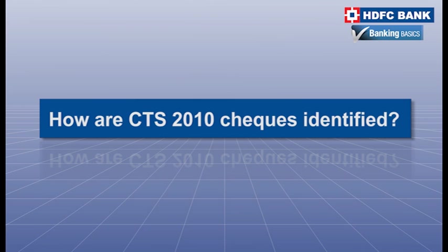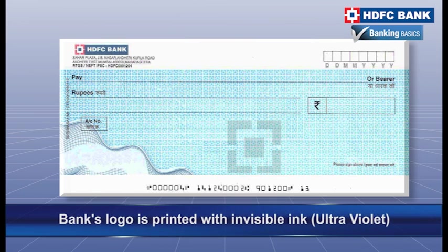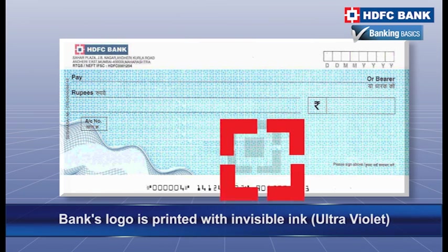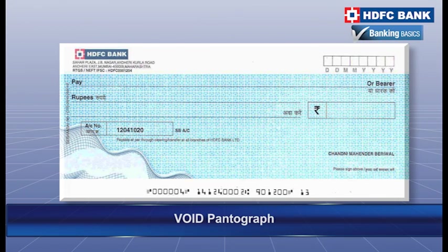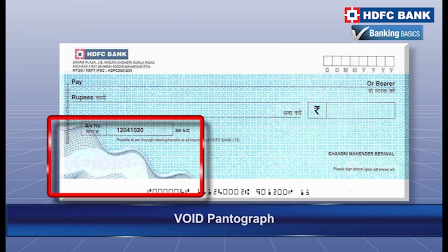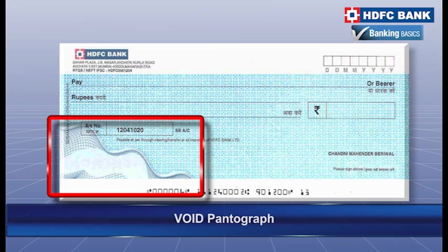How are CTS 2010 checks identified? These checks have the bank's logo printed with invisible ink. An ultraviolet pantograph is a special pattern printed on the check — if a color photocopy of the check is made, the word 'VOID' appears.